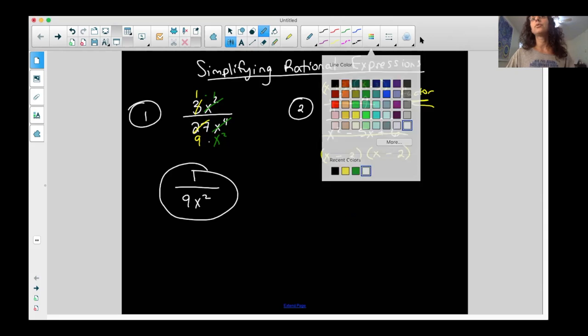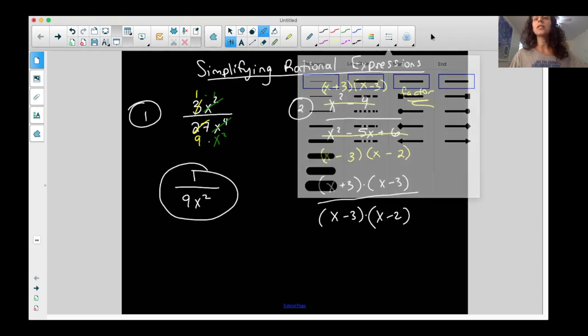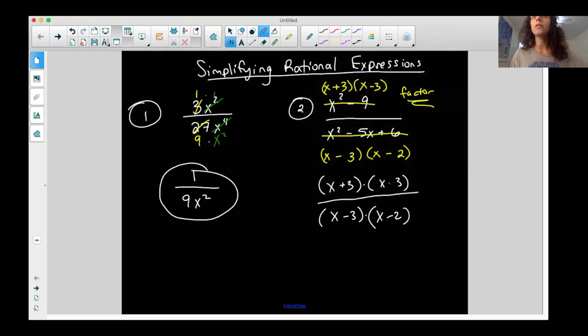Now, I'll rewrite it before I simplify, I don't typically rewrite this, but x plus three times x minus three on top and an x minus three times an x minus two on the bottom. And so now this is my factor form and I have product and product. I can only cancel things if I have multiplication in the numerator, multiplication in the denominator. And now I look for things that are in common. And it looks like I have an x minus three on the top and an x minus three on the bottom.